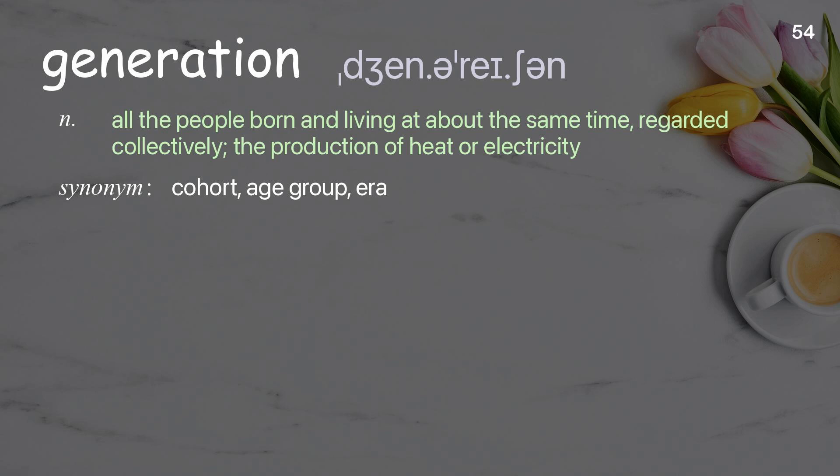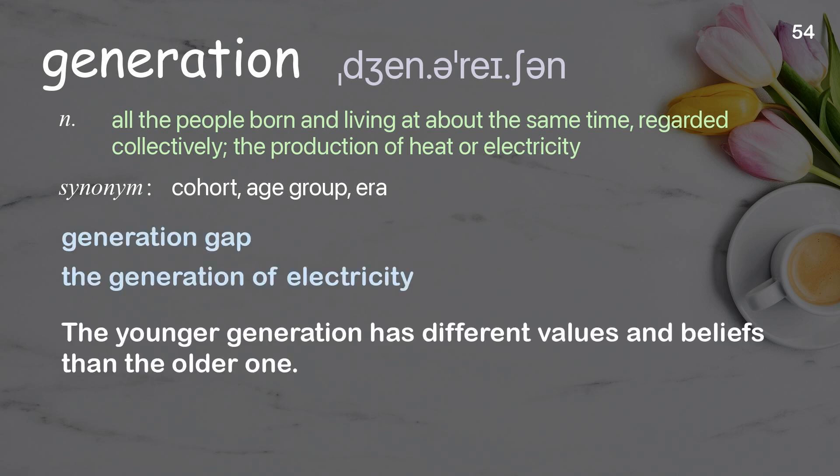Generation: All the people born and living at about the same time, regarded collectively; also the production of heat or electricity. Examples: Generation gap. The generation of electricity. The younger generation has different values and beliefs than the older one.